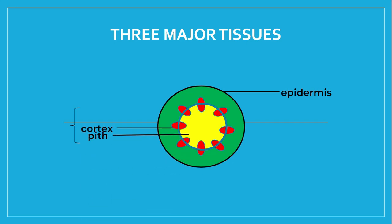Number two is the ground tissue, which is mostly composed of parenchyma cells. It has the pith and cortex. Pith is at the central core, inside the core, while the cortex is between the vascular tissue and epidermis, located outside the vascular tissue. In some plants, cortex cells contain chloroplasts for photosynthesis, and other cells may function to store starch. Pith and cortex cells function in the water support system of plants. The parenchyma cells have large vacuoles; when filled with water, they push outward toward the cell walls, making them firm and strong.